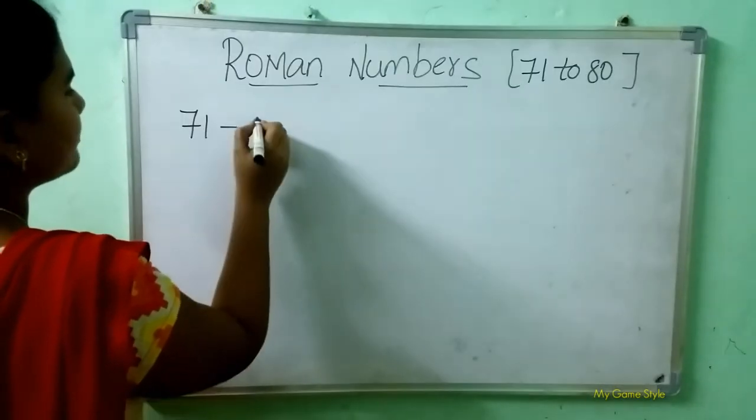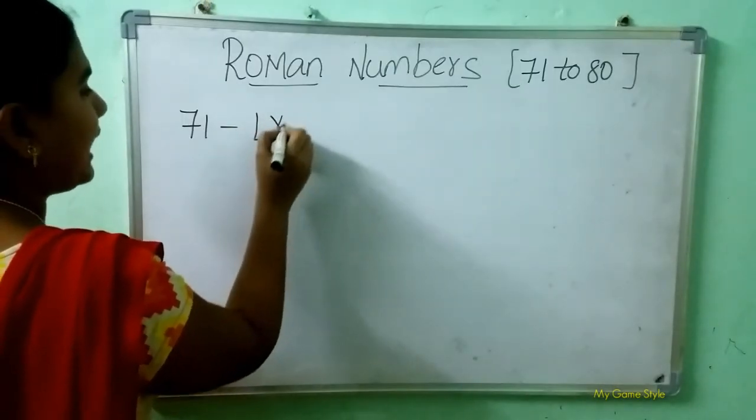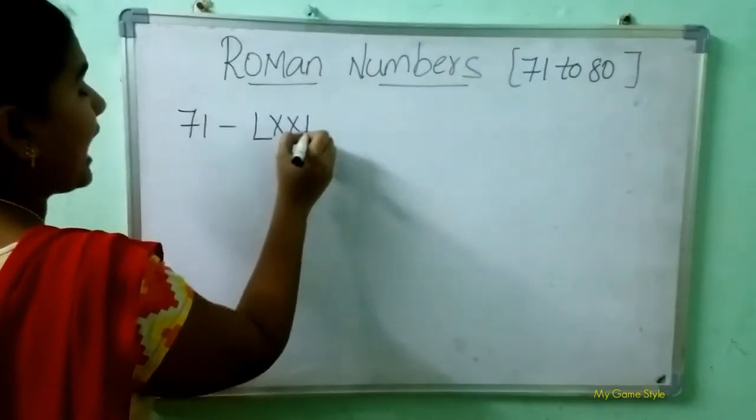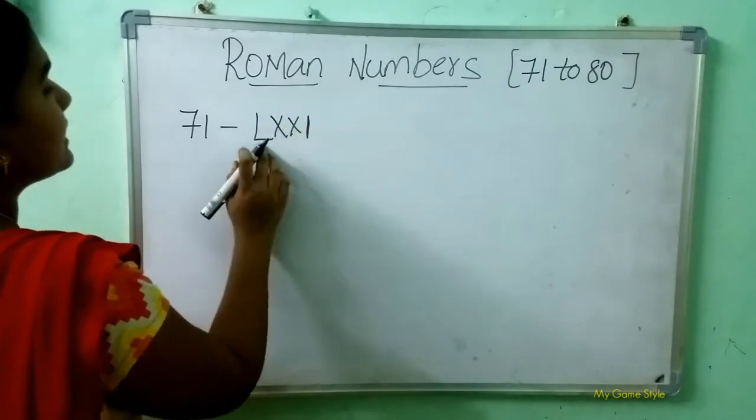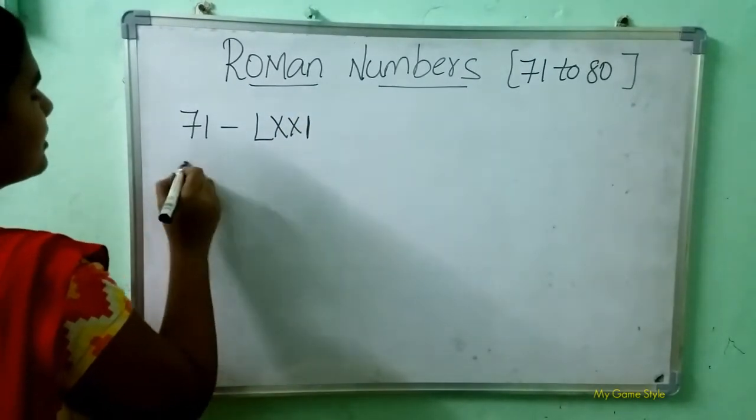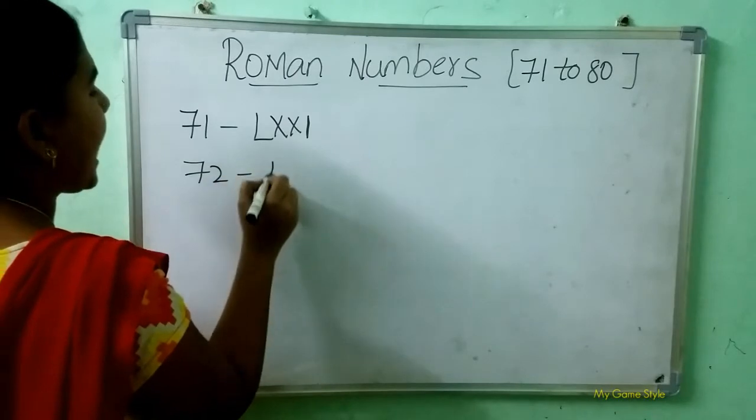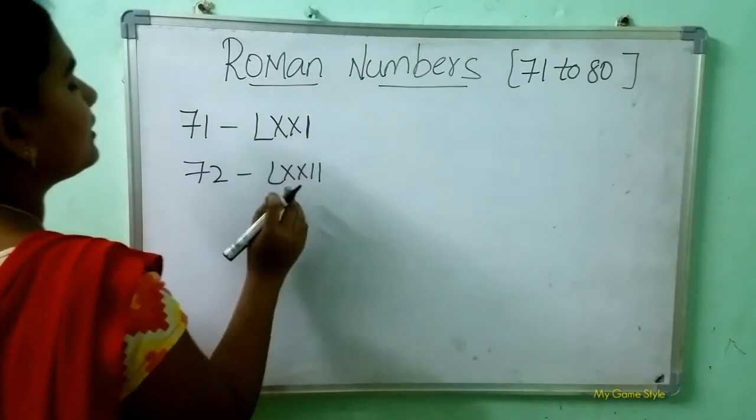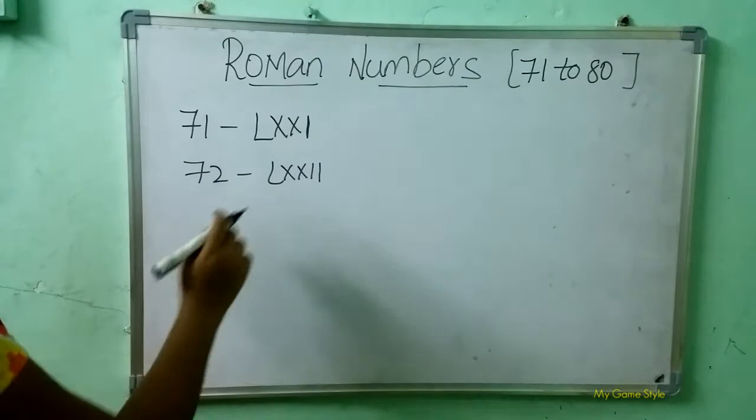71: L, double X, I. This is 71. 72: L, X, double I. This is 72.